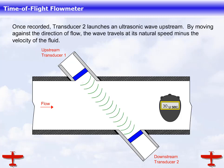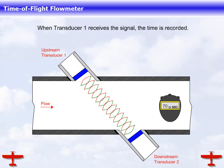Once recorded, transducer 2 launches an ultrasonic wave upstream. By moving against the direction of flow, the wave travels at its natural speed minus the velocity of the fluid. When transducer 1 receives the signal, the time is recorded.